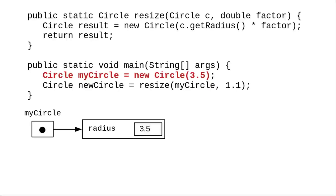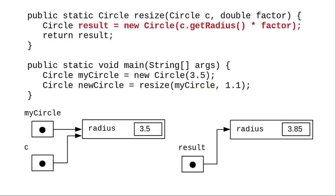As before, we create a circle in main, and as before, parameter C is a copy of the reference to myCircle.